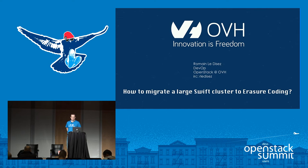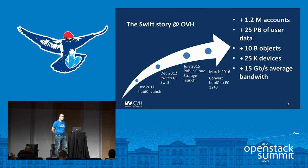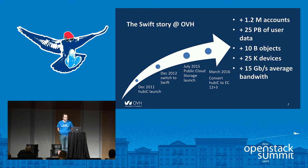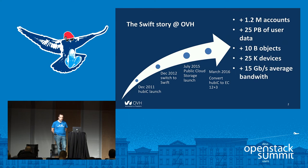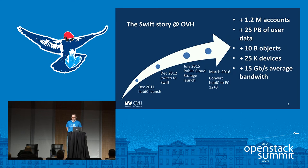Today I'm going to share with you our experience about migrating large clusters from replica policy to erasure coding policy. We launched in December 2011 an offer for the general public called Ubik — a cloud storage solution with applications for mobile, desktop, and also a web interface. At that time it was not running on Swift and we quickly found out it would not scale enough, so one year later we migrated all the data to Swift. Since then it has been running smoothly. One year ago we launched a public cloud offer with instances based on Nova and Neutron, and also of course object storage based on Swift.